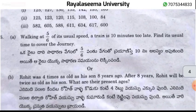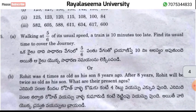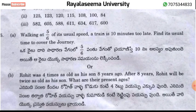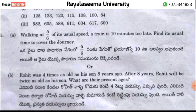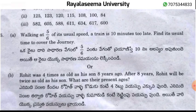Question number 15, part A: Working at 5/6 of its usual speed, a train is 10 minutes too late. To find its usual time to cover the journey — the answer is 50 minutes.